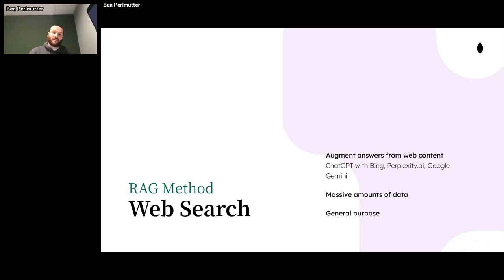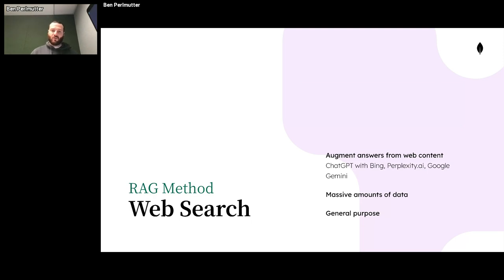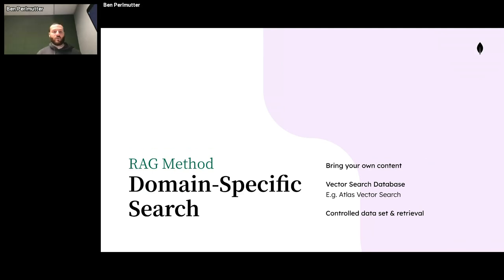One popular method of retrieval augmented generation we see these days is with web search. This is particularly popular in centralized tools like ChatGPT, which has support for Bing, or Google Gemini — so when you input some queries, they go off and do a whole web search to find relevant content to help answer your question. Web search is nice because there's a lot of very useful data on the web, but it's not as optimized for your use case because you don't have much control over this massive search. You'll probably get decent content, but without much control.